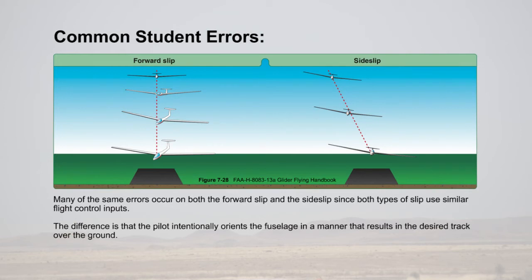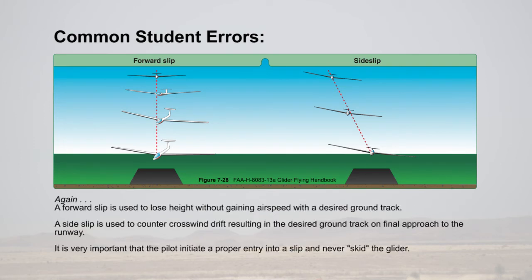Many of the same errors occur on both the forward slip and the side slip since both types of slips use similar flight control inputs. The difference is that the pilot intentionally orients the fuselage in a manner that results in the desired track over the ground. A forward slip is used to lose height without gaining airspeed with a desired ground track, while a side slip is used to counter crosswind drift, resulting in the desired ground track on final approach to the runway. It is very important that the pilot initiate a proper entry into a slip and never skid the glider.